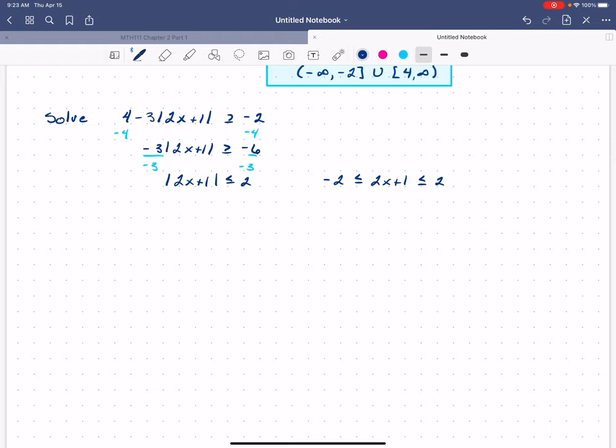We can work this three-part inequality just as we would a two-part inequality. It just means that what we do in one place we have to do everywhere. So I'm going to subtract one in the middle and subtract one on both ends, and that leads me to negative 3 is less than or equal to 2x, which is less than or equal to 1. Divide through by 2.